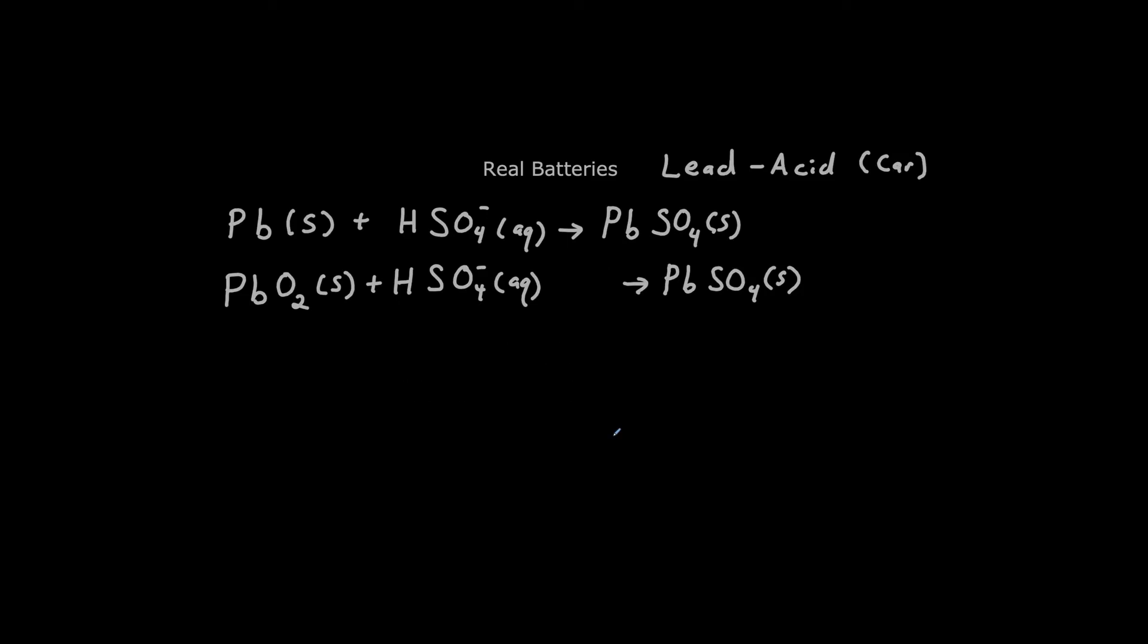Here are the reactions for the lead-acid cell. Now what we're going to do is figure out which of these is the anode and which is the cathode, and use oxidation numbers to figure out how many electrons are transferred for those two reactions. Pause the video now and figure out what the oxidation numbers for lead is in both of these reactions, and use that to figure out which is the cathode, which is the anode, and how many electrons are transferred in each half cell.